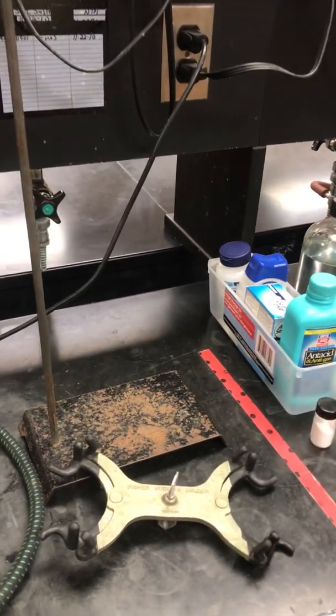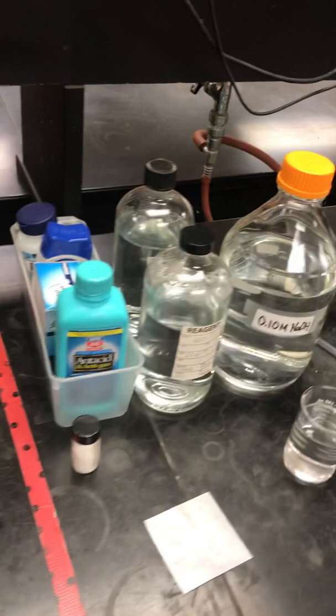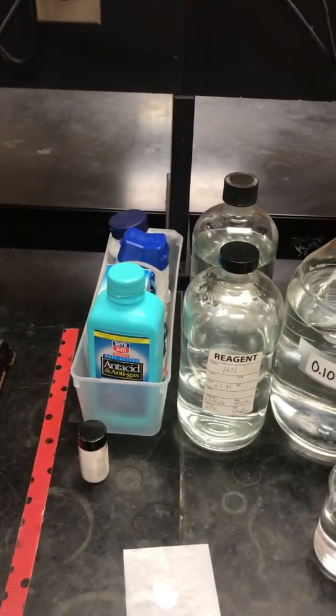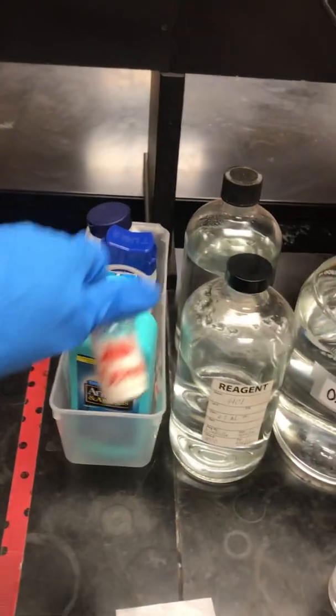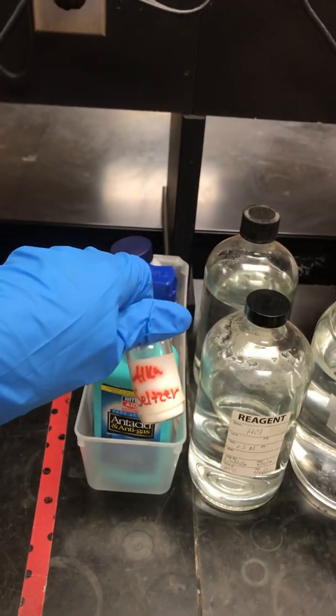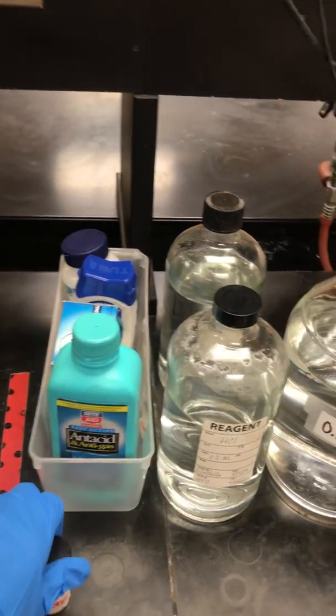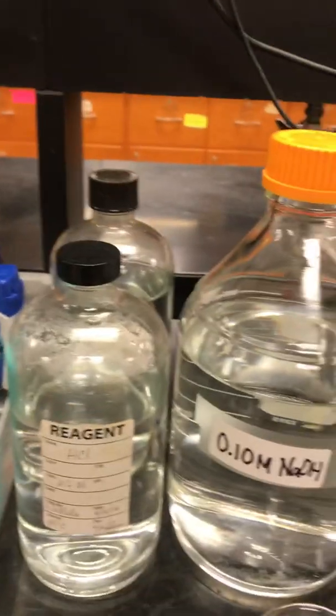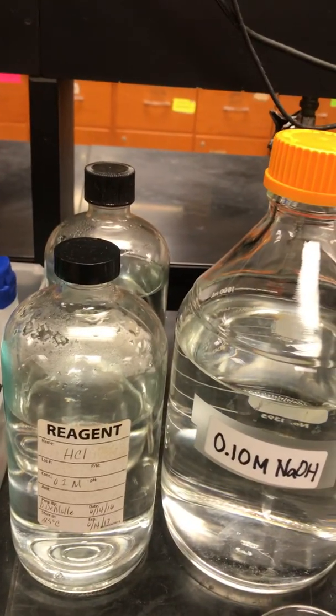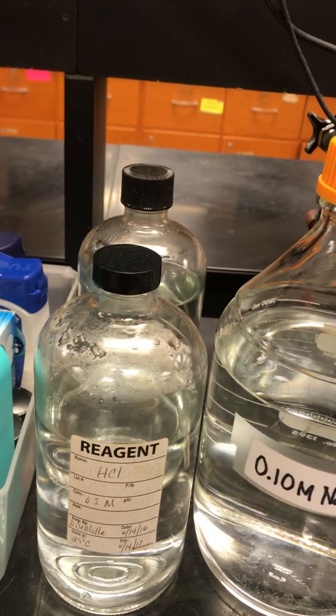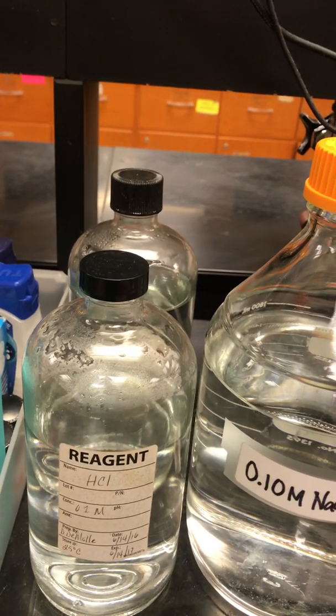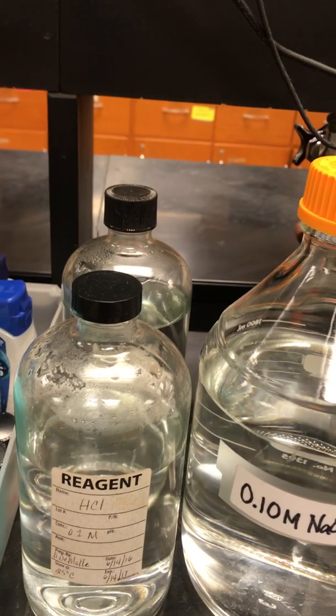We're setting up the antacid analysis lab. You're going to have your reagents such as your antacid already pulverized with the name on there. Make sure you write the name. You're going to have your solutions, your HCl and your sodium hydroxide. Look on the bottle and write your concentrations and molarity down on your report sheet.